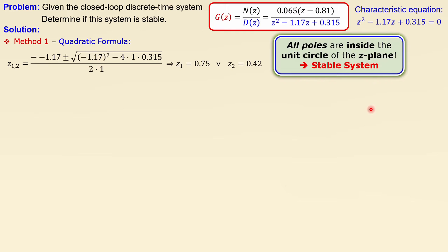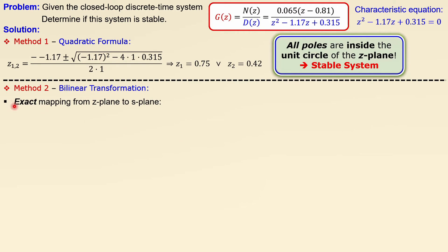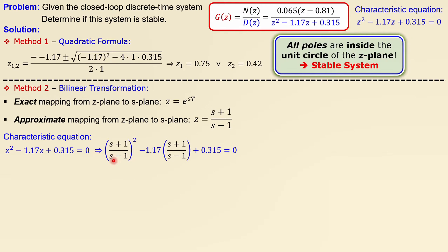For a third order system you can still use this approach, but at higher orders it becomes very difficult. Now let's look at Method 2, the bilinear transformation. This is an approximation method. The mapping from the z-plane to the s-plane is given by z = (s+1)/(s-1). We substitute this expression for z in the characteristic equation.